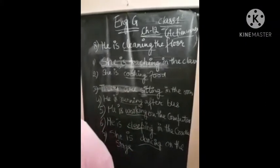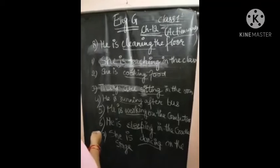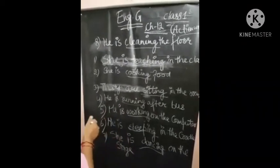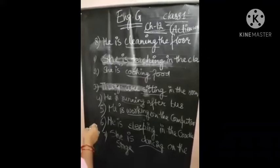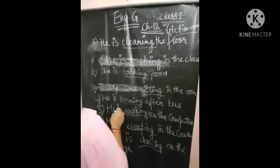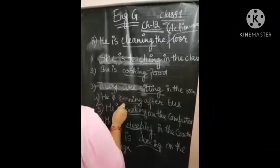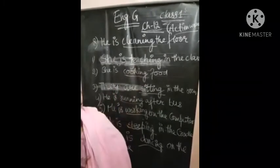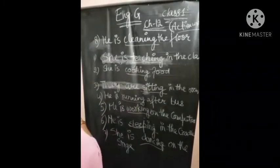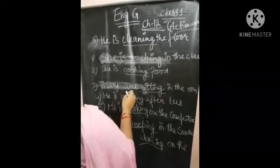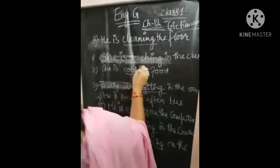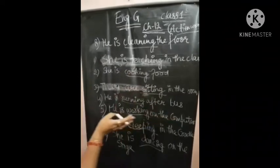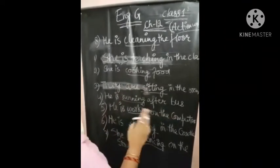Action words are verbs, which are words that describe actions. These are examples of different actions, and some persons are doing different actions, as these examples show.